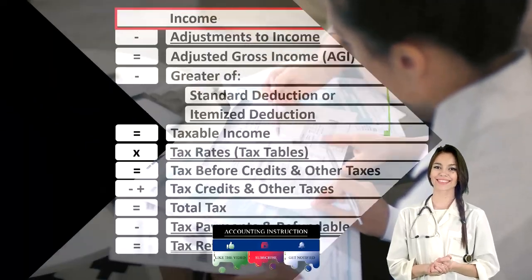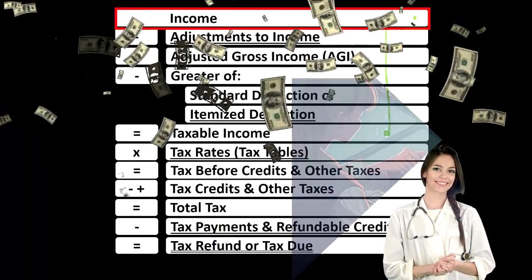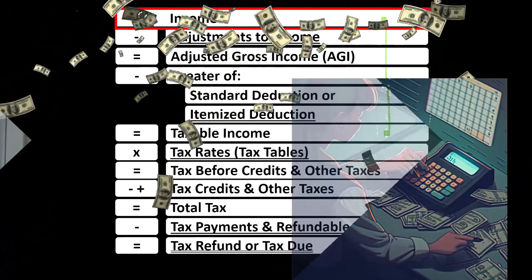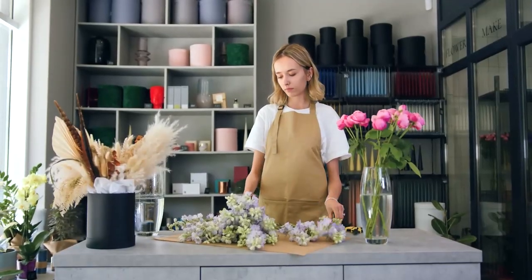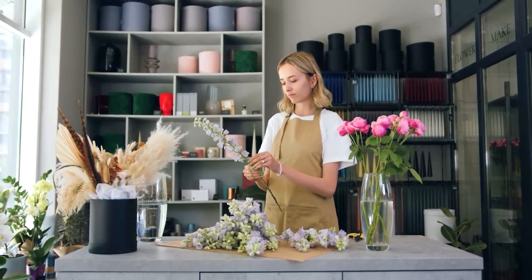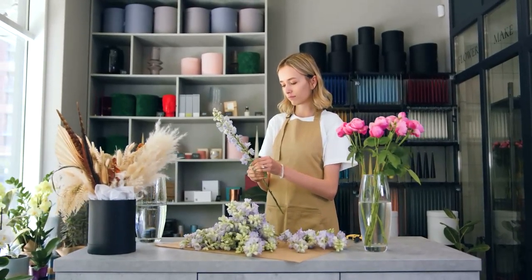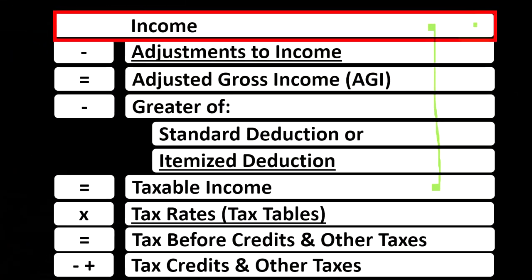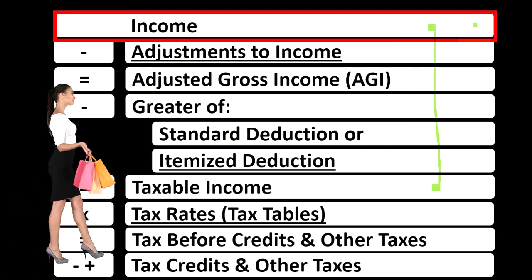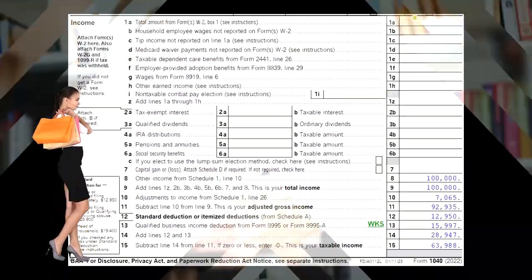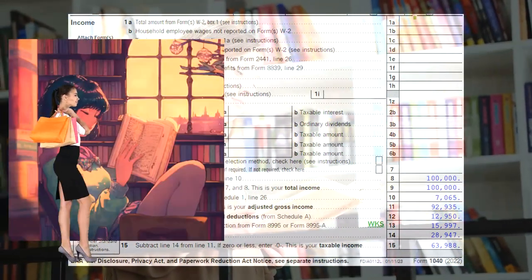For example, with the income line, we're focusing in on Schedule C, often used for sole proprietorships, which in essence is its own income statement — having income minus expenses, which are basically business deductions. The net income of the Schedule C flows into the income line item of our income tax formula.